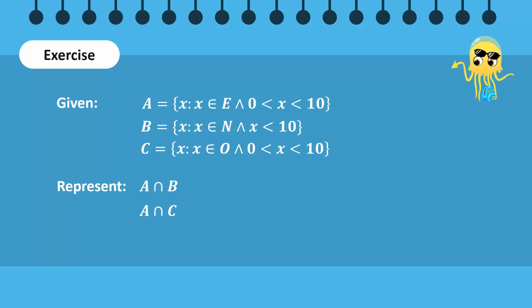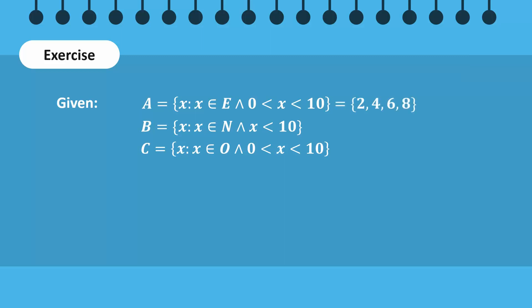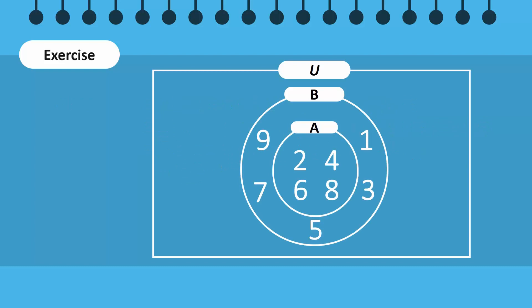Let's review an example. Set A contains the even numbers 2, 4, 6, and 8. Set B contains the first 9 natural numbers, and set C contains the odd numbers 1, 3, 5, 7, and 9. Observe that A is a subset of B — this is the resulting Venn diagram. A intersection B will contain elements that are common to set A and set B, so set A will be shaded.